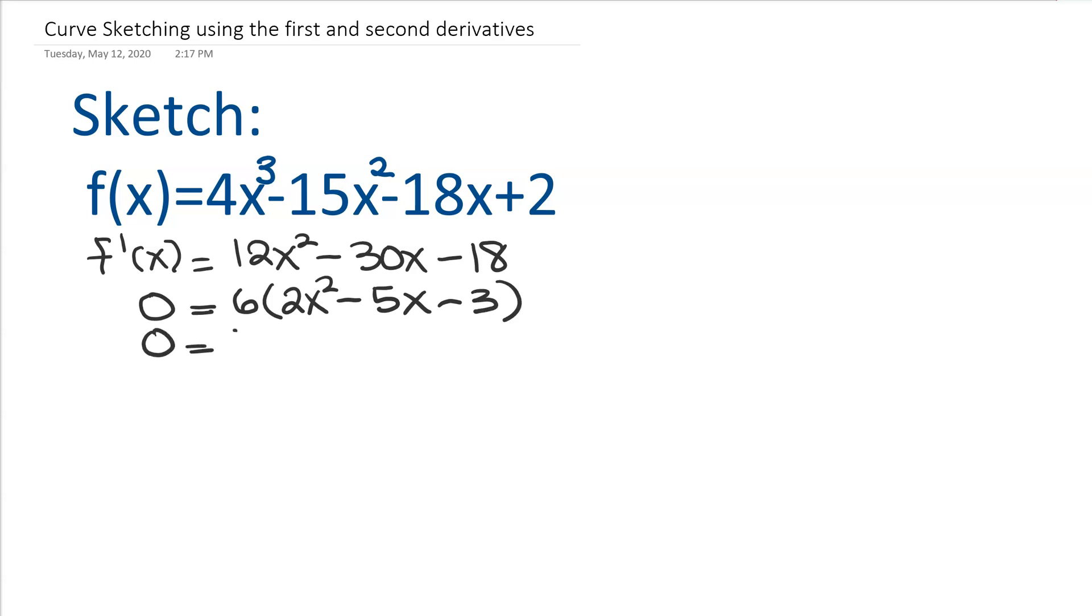Keep going on with the factoring, and again if you need to pause to do your own thinking on the factoring, then please do. And if we set our factors equal to 0, we're going to get two critical points. So we're going to have x is negative 1 half, and x is 3. So these are critical points.